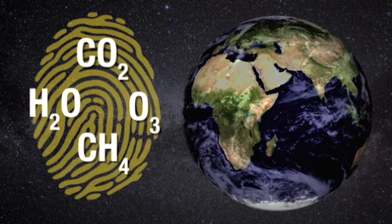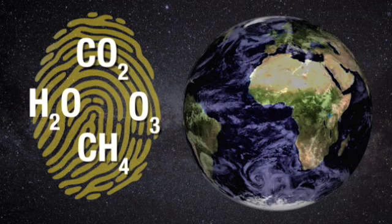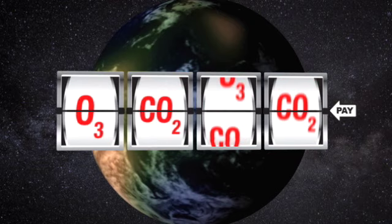In the right combination, these golden fingerprint chemicals can indicate Earth-like biological activity. If we can find all of them in the atmosphere of a temperate, rocky planet, we have hit the jackpot.